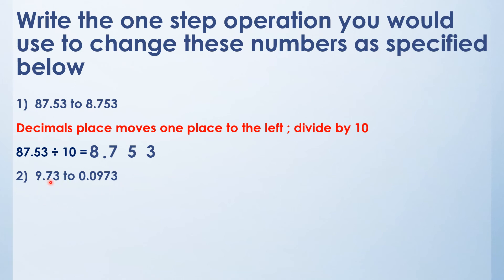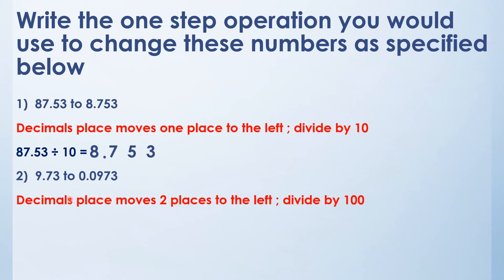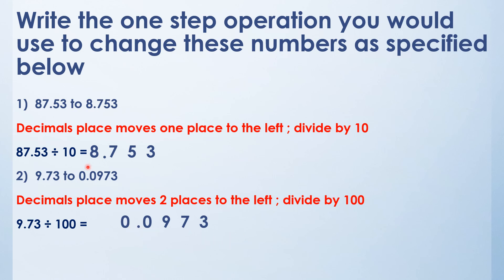इसी तरह 9.73 को 0.0973 में convert करेंगे. यहाँ two decimal places हैं और यहाँ four decimal places हैं, मतलब two decimal places move कर गया left की तरफ. तो decimal place moves two places to the left when divided by 100. 9.73 में 100 से divide करिए — two decimal places थे, total four हो जाएंगे: 0.0973.